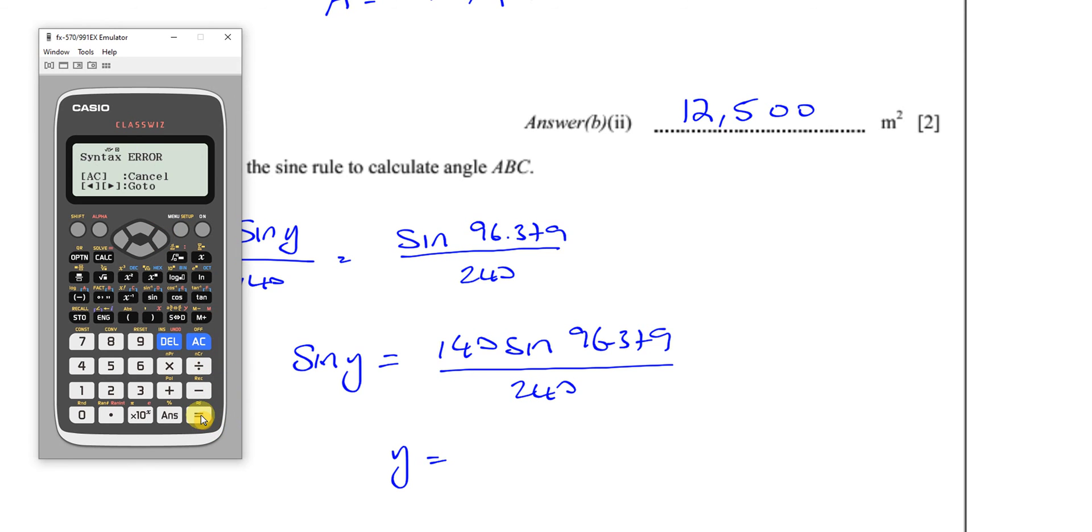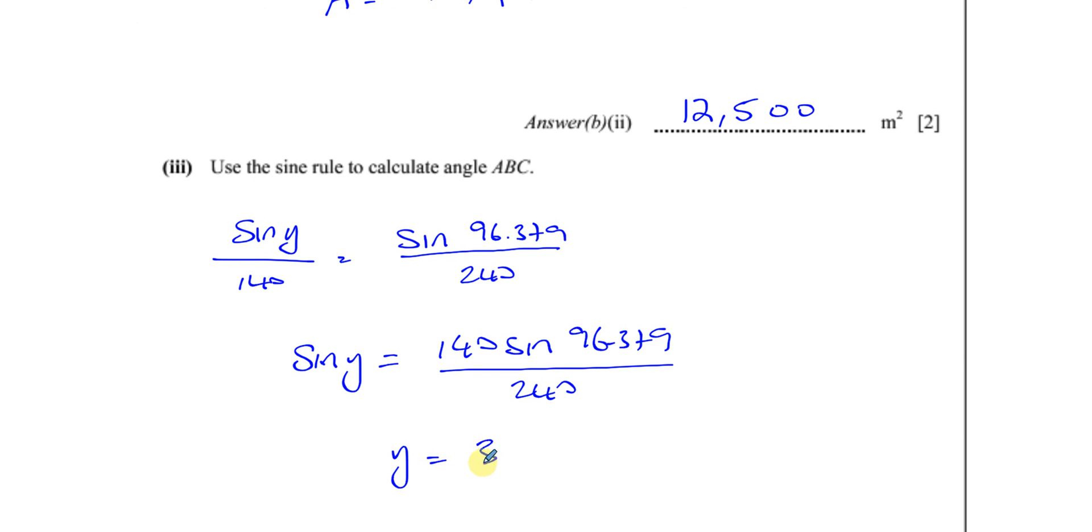Whoops. What did I do wrong here? Oh. I forgot to put the bracket for the angle there. That should give us the answer. 35.4309. 35.4309 dot dot dot. Now let's just make sure. A, B, C. Yeah, that's going to be acute. That's fine.